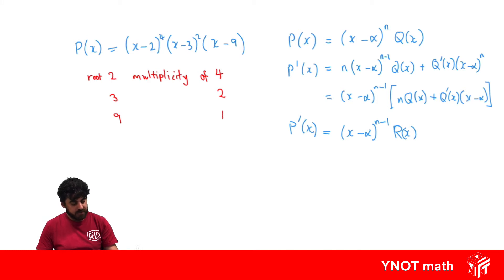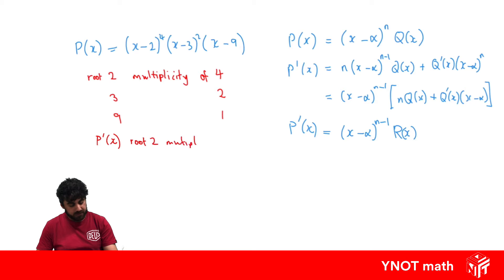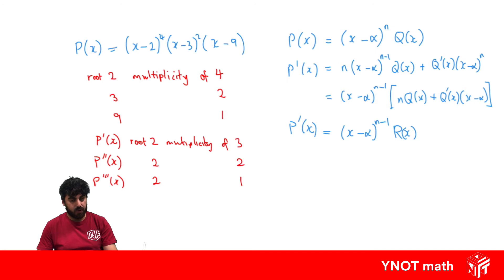Going back to our first example: root 2 has multiplicity 4. That means in p'(x), root 2 has multiplicity 3; in p''(x), root 2 has multiplicity 2; and in p'''(x), root 2 has multiplicity 1.